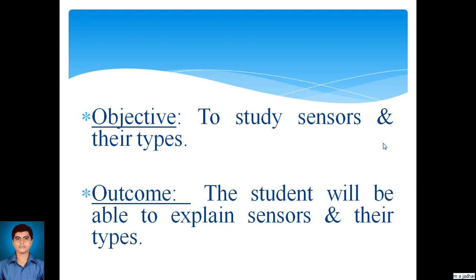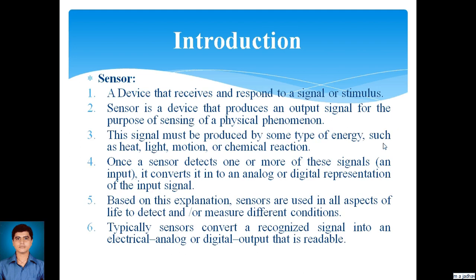So let's start — what is a sensor? A sensor is typically a device that receives and responds to a signal or a stimulus. A sensor is a device that produces an output signal for the purpose of sensing a physical phenomenon. This signal must be produced by some type of energy such as heat, light, motion, or chemical reaction. Once a sensor detects one or more of these signals, it converts them into an analog or digital representation of the input signal. Sensors are used in all aspects of life to detect or measure different conditions, typically converting a signal into an electrical analog or digital output which is readable.